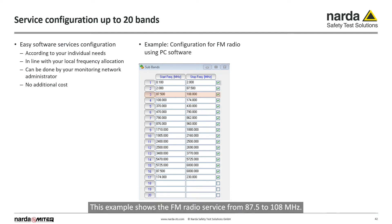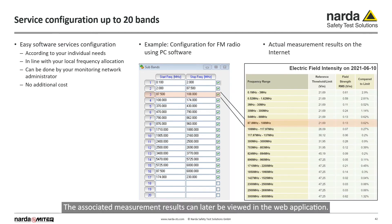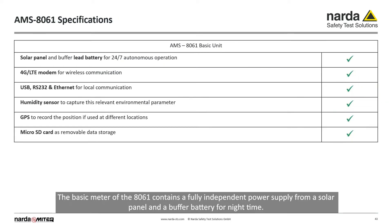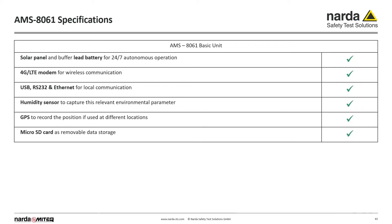This example shows the FM radio service from 87.5 to 108 MHz. The associated measurement results can later be viewed in the web application. The basic meter of the 8061 contains a fully independent power supply from a solar panel and a buffer battery for night time, enabling continuous measurement 24-7.